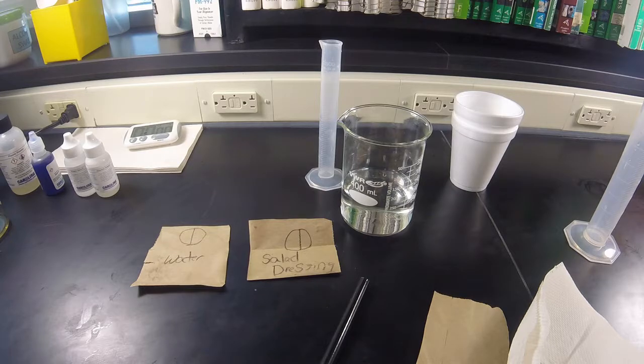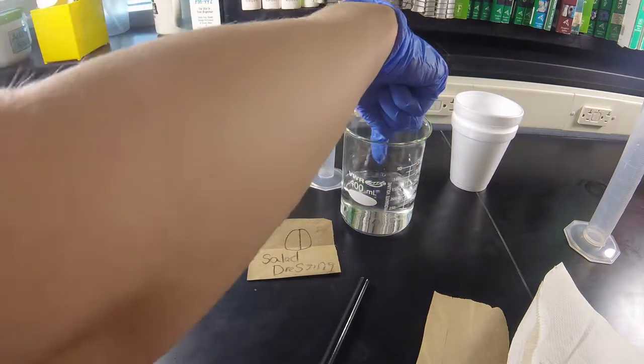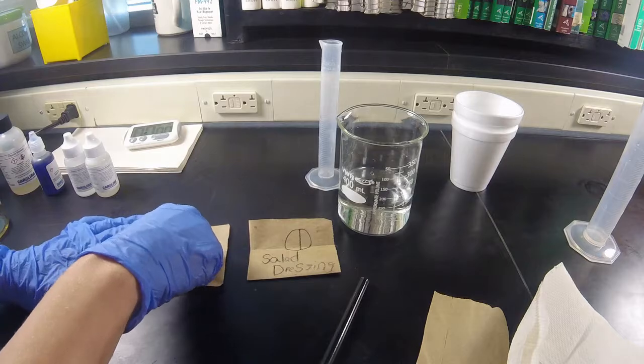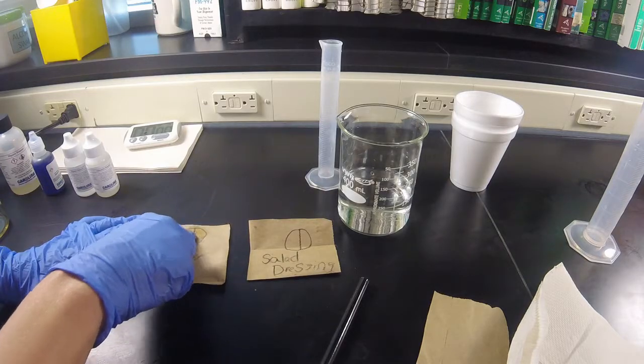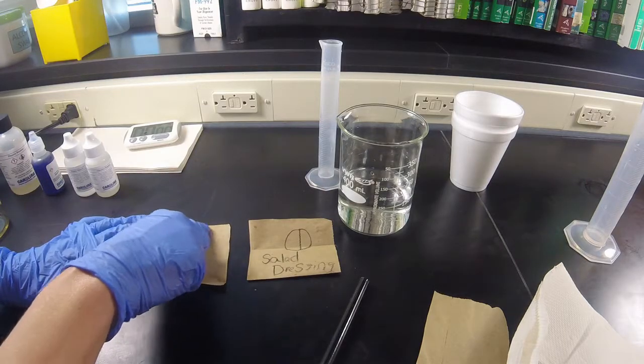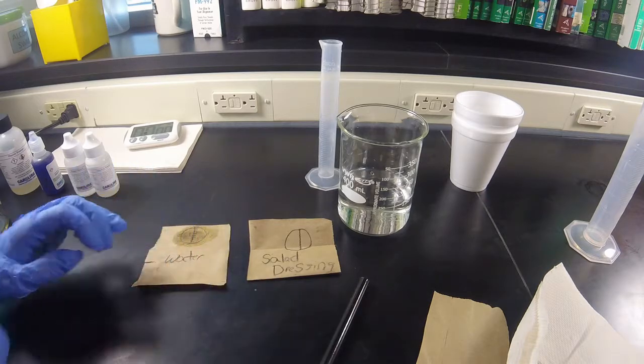First thing you're going to do is place a sample and drop or rub it gently on the appropriate labeled circle or square. The first is water. I rub the water into my circle, or square if you drew a square.